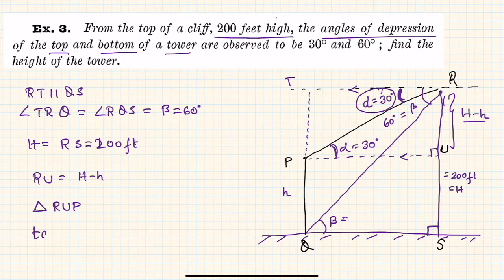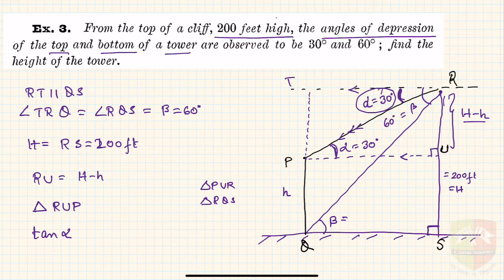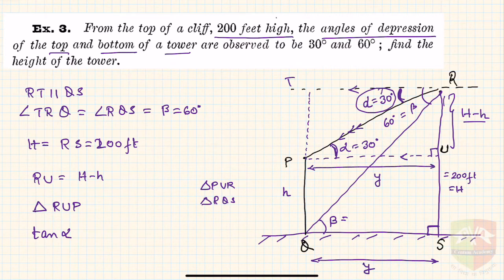We are interested in triangle RUP because we can see a 90-degree angle and we know angle alpha. Now, tan is preferred over sine or cosine because using sine or cosine would involve the length PR, which is unknown. What is common to both right angle triangles — triangle PUR and triangle RQS — is this length QS. Let it be y, so QS equals y and PU also equals y, because PQSU is a rectangle.